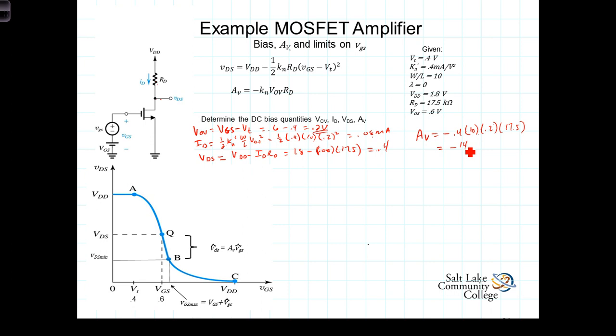So we've calculated the bias values. VGS, the bias voltage of the gate, was given to us. V sub T, of course, was given to us. We've determined that VDS, then, this equals .4 volts, and we also know that the current, the DC current, is the 80 microamps.